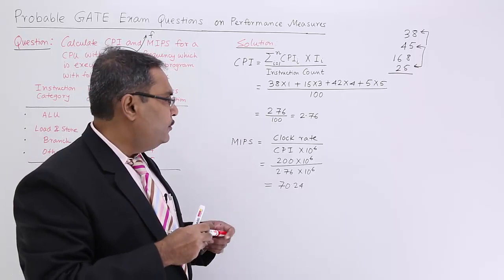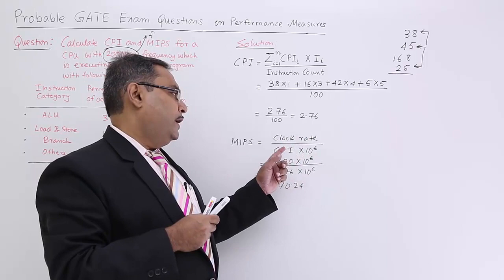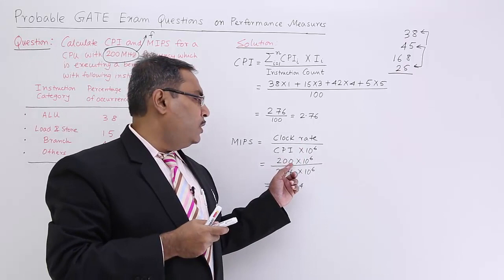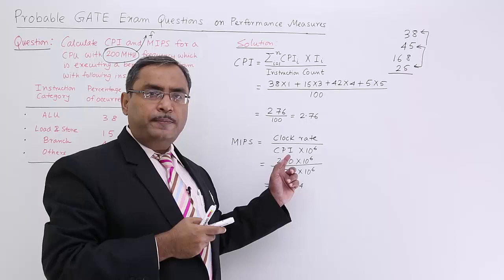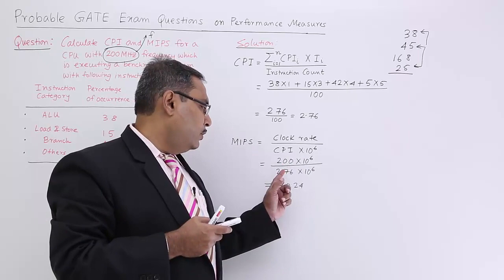Now, MIPS. What is the formula for MIPS? Please watch the prior videos. Clock rate by CPI into 10 to the power of 6. Clock rate here, the clock rate I told you is 200 megahertz. So 200 mega means 200 times 10 to the power of 6 by CPI, just now I have calculated, and million.